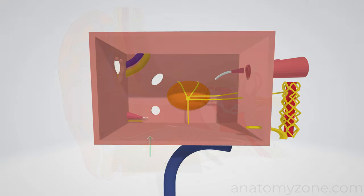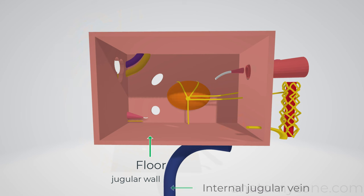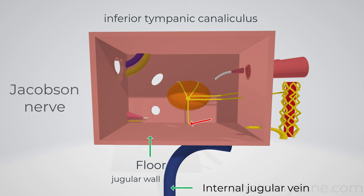The floor, or the jugular wall, is formed by a thin layer of bone separating the tympanic cavity from the internal jugular vein. This contains a small aperture, the inferior tympanic canaliculus, which transmits the tympanic branch from the glossopharyngeal nerve. This is known as Jacobson's nerve.